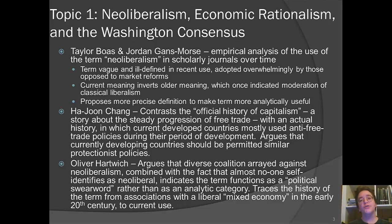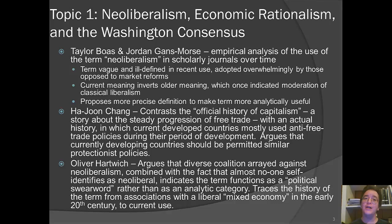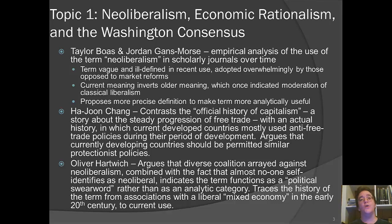Ha-Joon Chang responds more to the literature on the Washington consensus — the notion that there is a relatively uniform set of economic policies that developing countries ought to adopt. Chang contrasts what he calls an official history of capitalism, which assumes a steady progression toward freer trade, with the actual history, in which currently developed countries mostly used anti-free-trade policies during their own development. He argues that developing countries today should be permitted similar protectionist policies based on their local conditions.